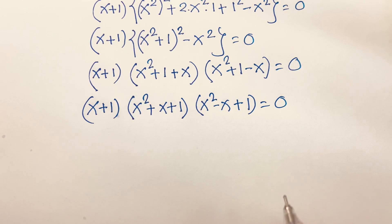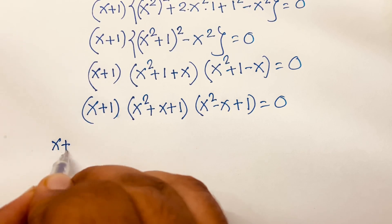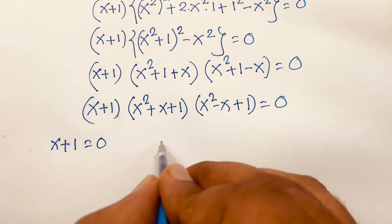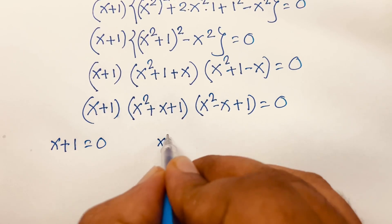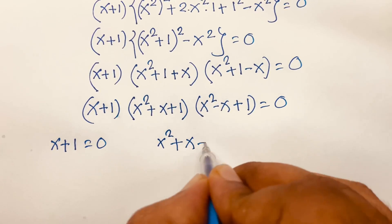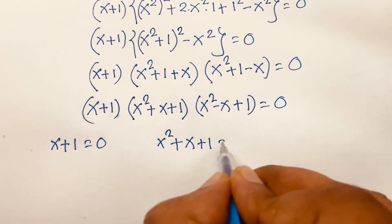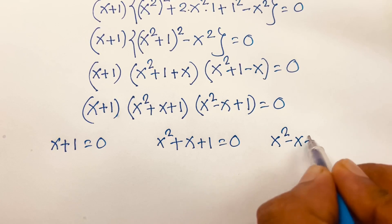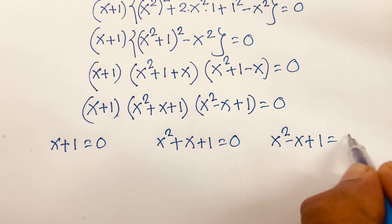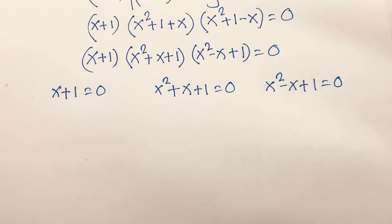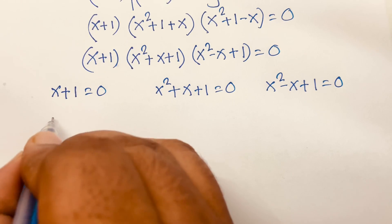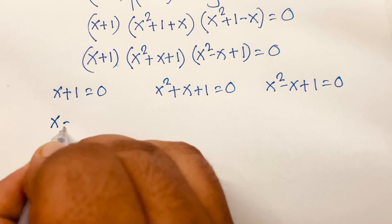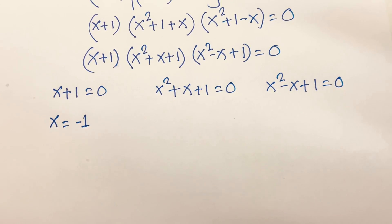There are three cases. Case 1: x + 1 = 0. Case 2: x² + x + 1 = 0. Case 3: x² - x + 1 = 0.